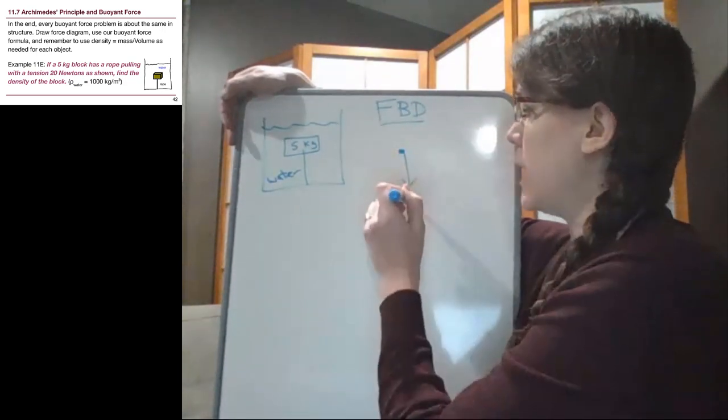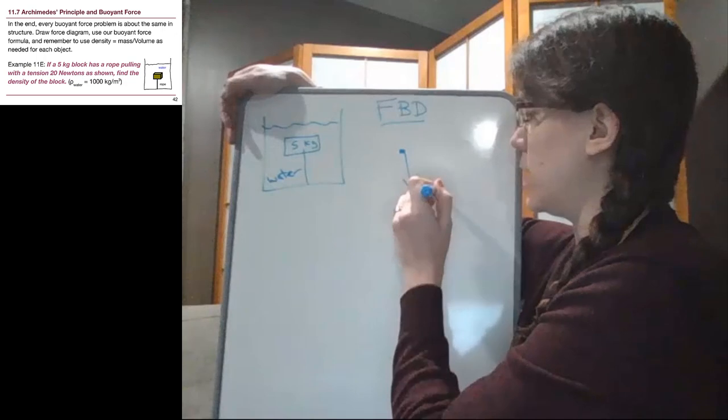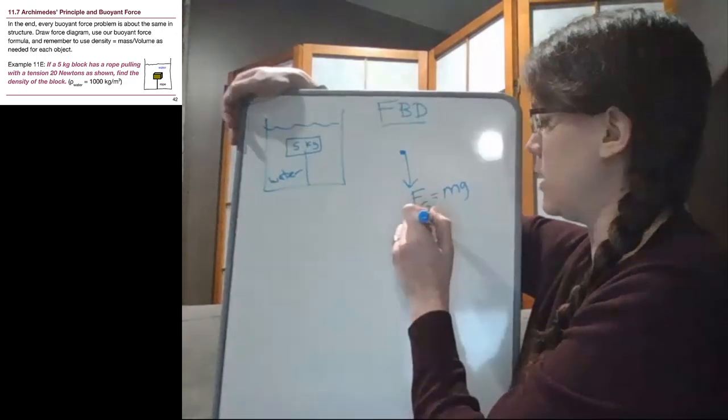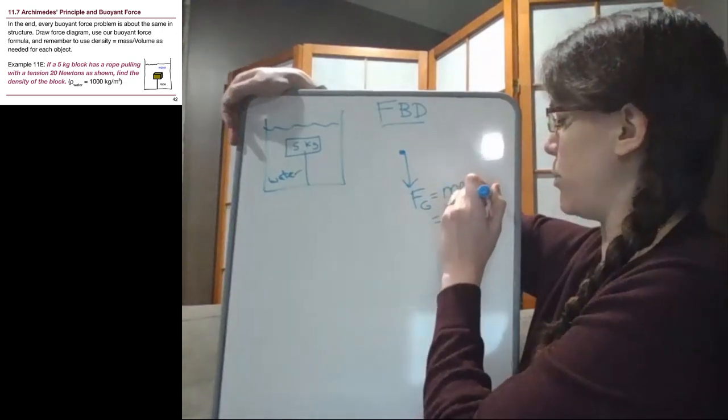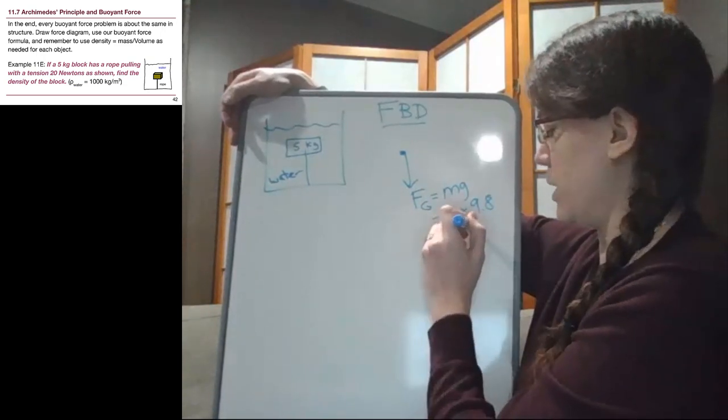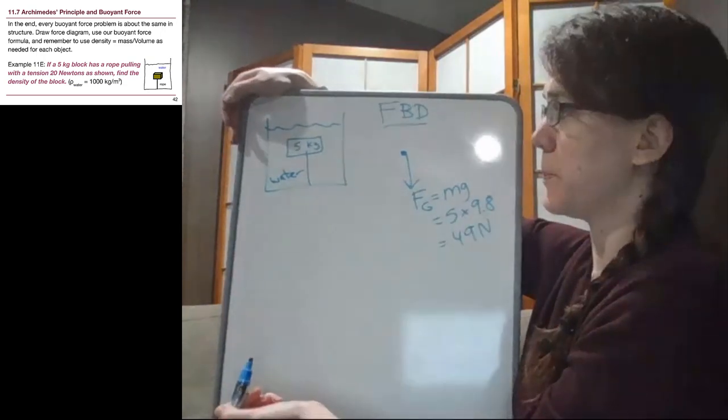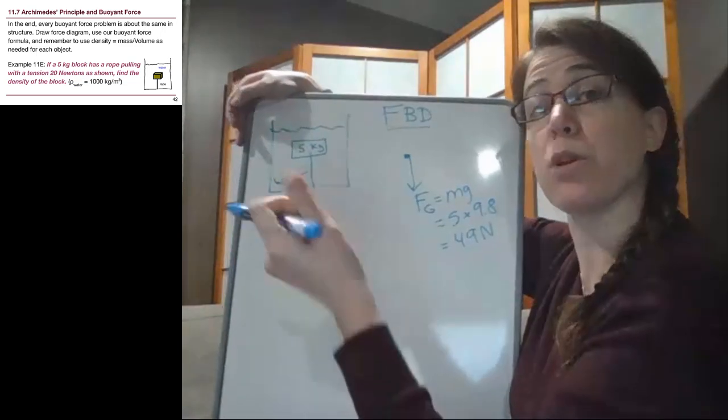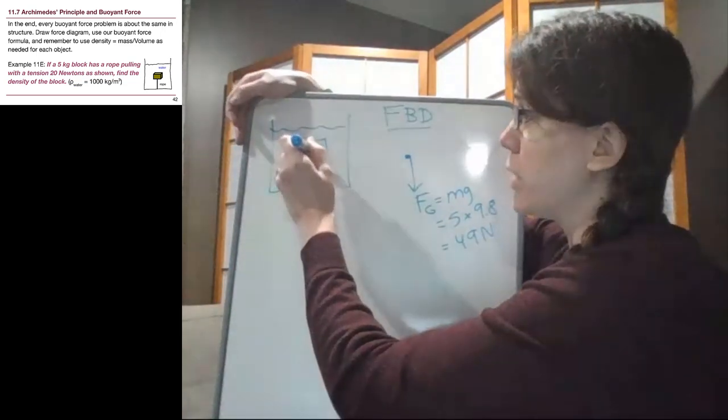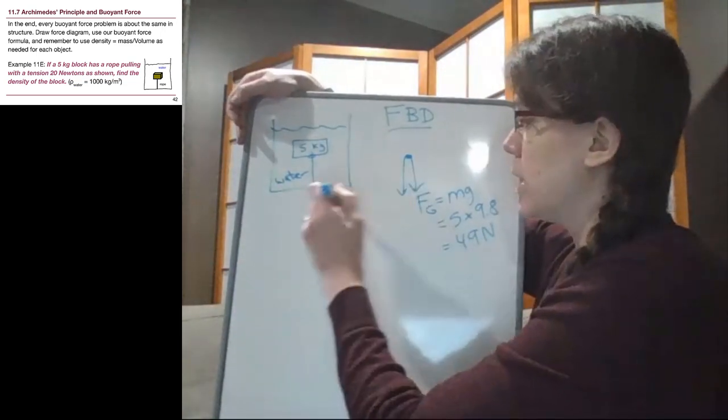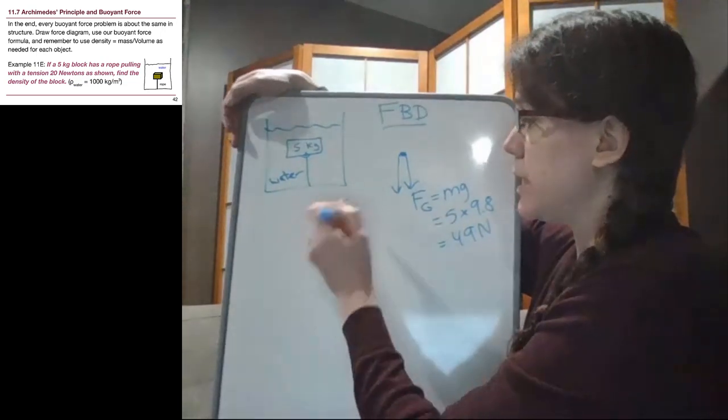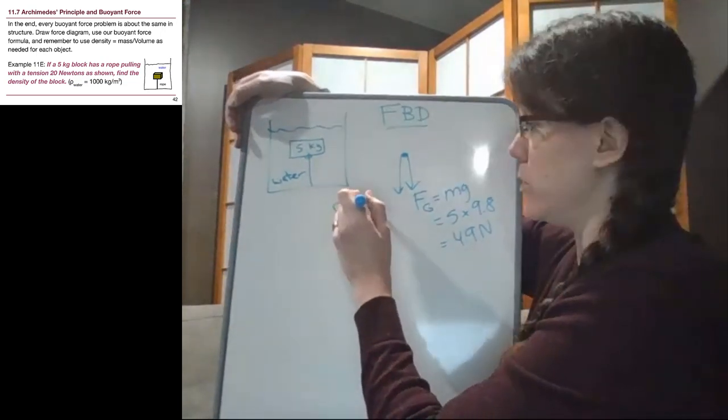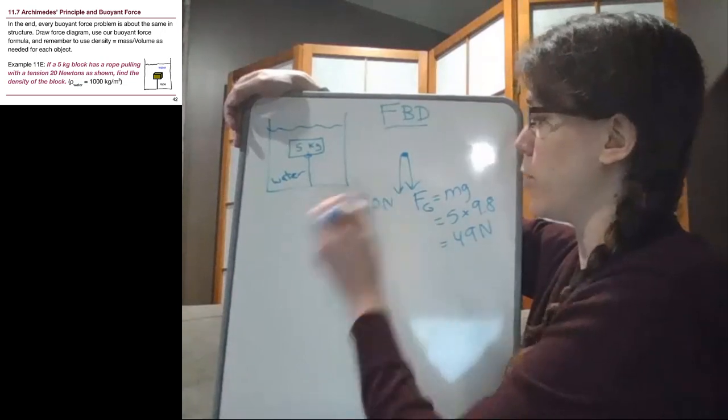Now the block has gravity acting on it. That gravity is m times g, so it's five times 9.8, and so it's 49 Newtons. It has the tension pulling down on it. That rope is trying to pull this thing downwards, and we are told that that tension is equal to 20 Newtons. That's a given value for us.